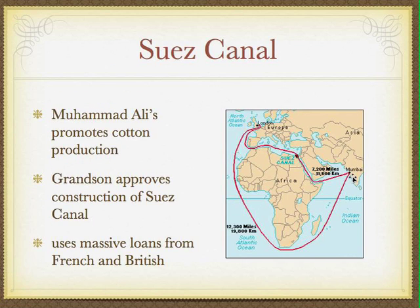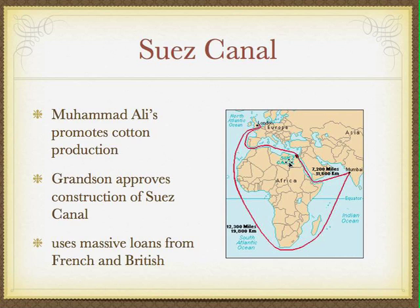The Suez Canal was critically important because previously ships had to sail all the way around Africa to reach India. Now they could cut enormous mileage by sailing through the canal, connecting the Red Sea to the Mediterranean Sea. Muhammad Ali promoted cotton production, giving us the very famous high-quality Egyptian cotton. His grandson Ismail approved construction of the Suez Canal using massive loans from the French and British. Ultimately, the French built it, but the British gained control because Egypt fell into debt.